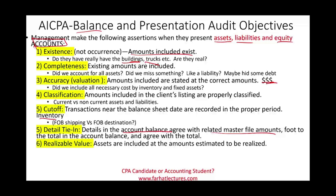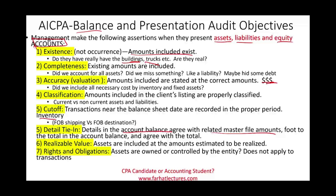Realizable value: are assets included at the amount estimated to be realized? For example, accounts receivable, inventory — NRV, LCM. Rights and obligation: assets are owned or controlled by the entity. Do we have rights to our assets and obligation for the liabilities we have? Are these truly our obligations? Is our liability indeed our liability?